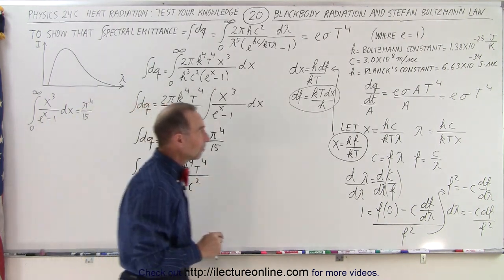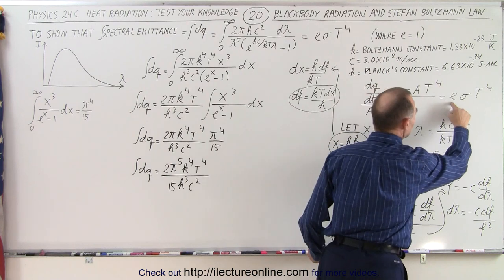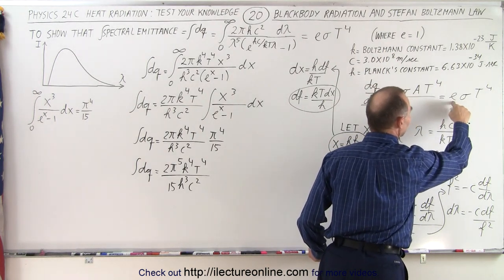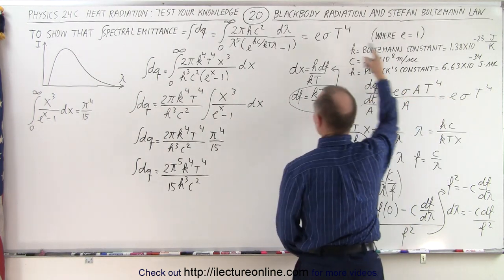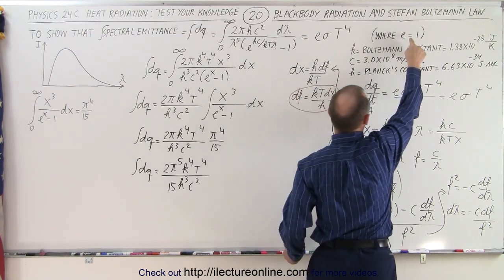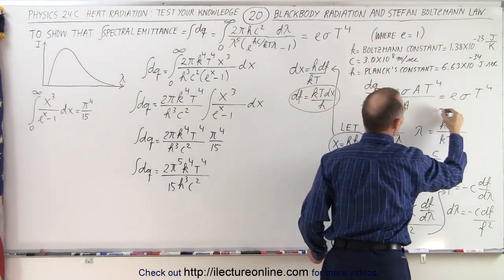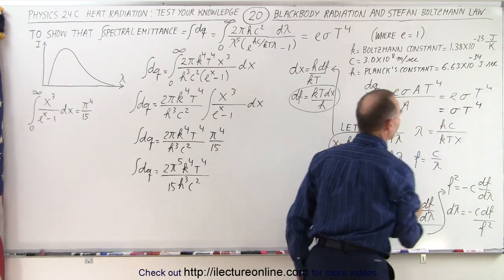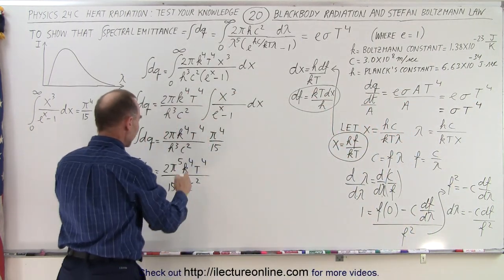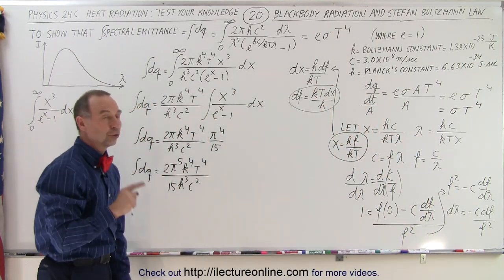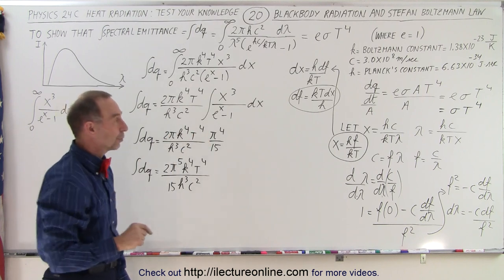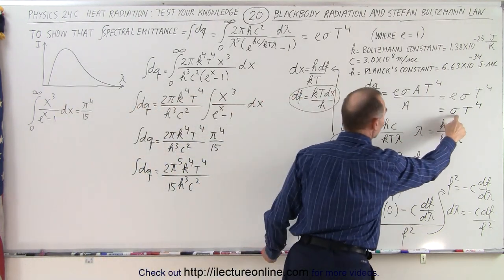And now when we take a look at the Stefan-Boltzmann's law, at least the intensity portion of it, and realizing that the emissivity for a black body radiator is going to be equal to 1, that means that this should be equal to σ times T to the 4th power, which means that this whole thing except T to the 4th power should be equal to that. And of course, this is the Stefan-Boltzmann's constant.